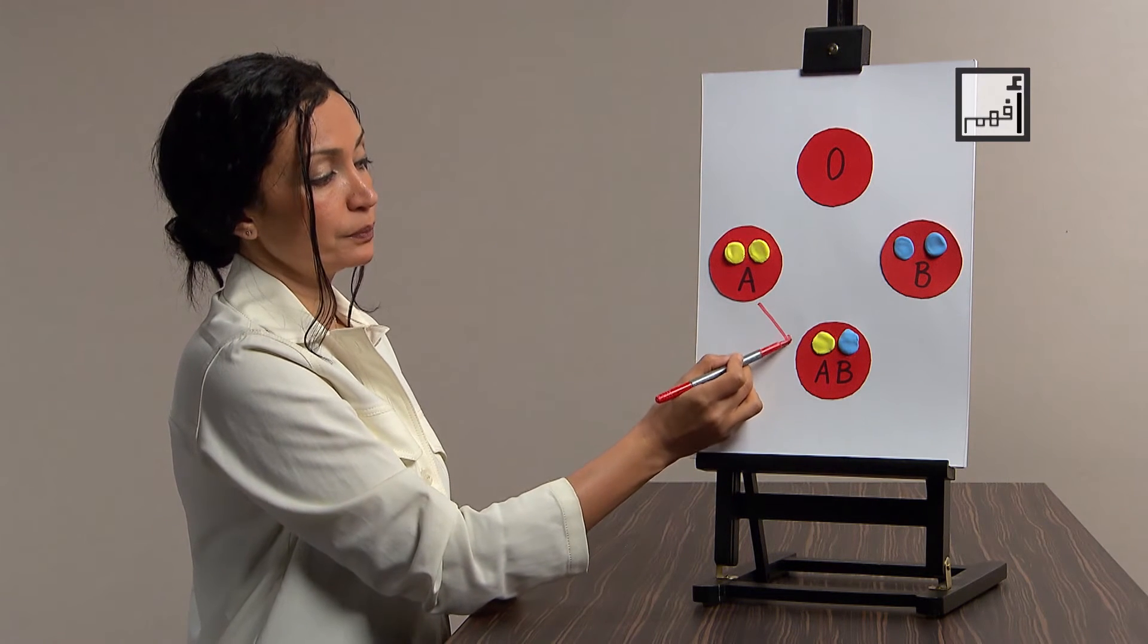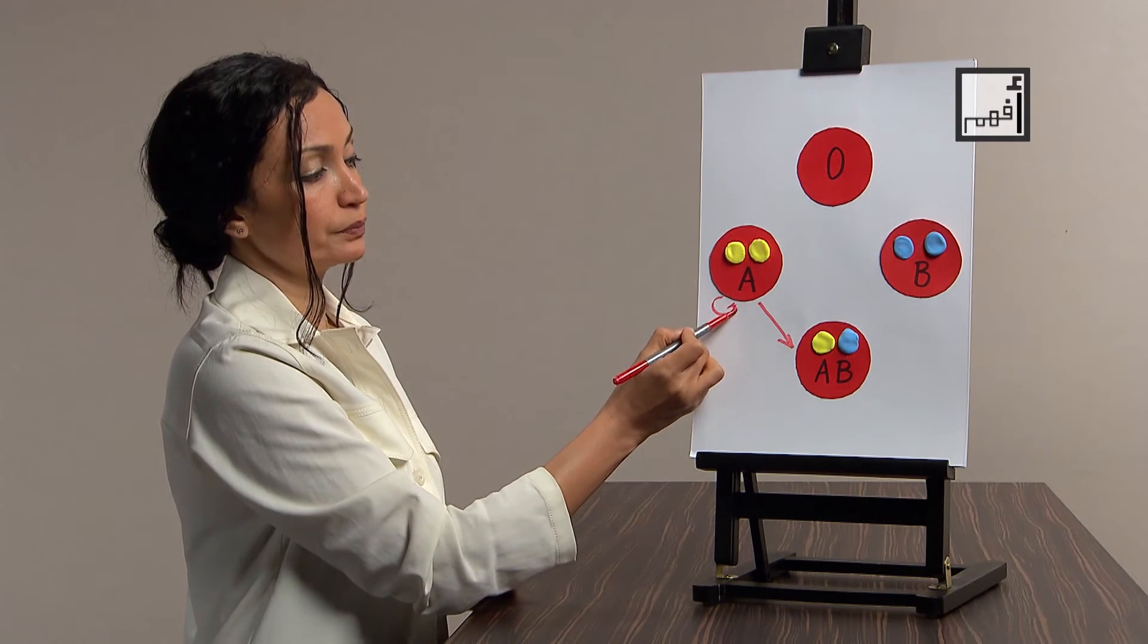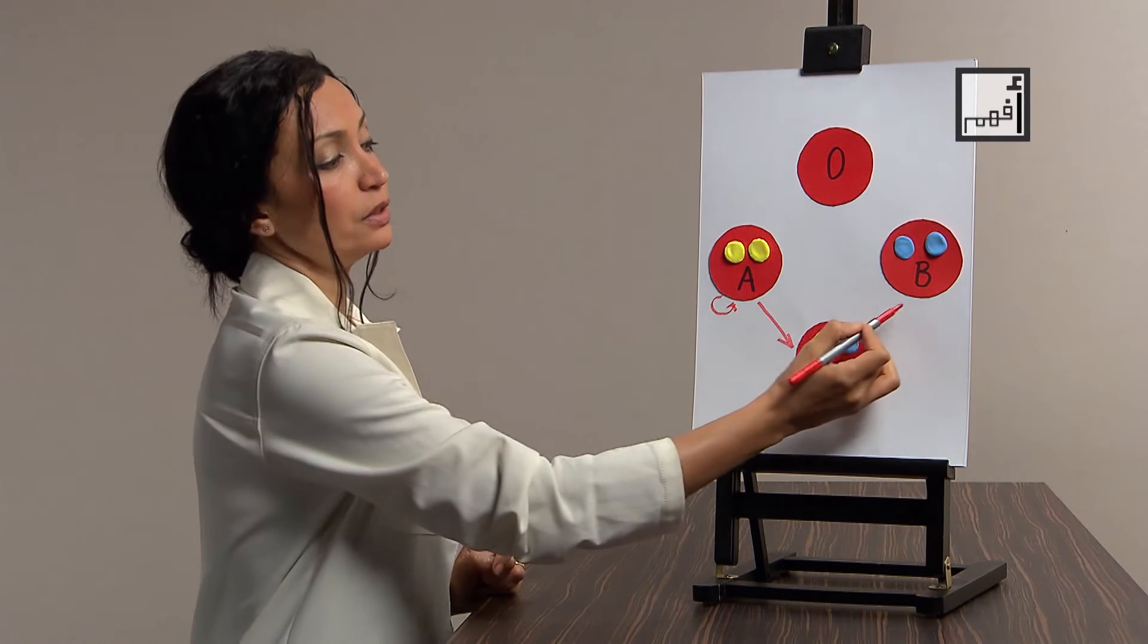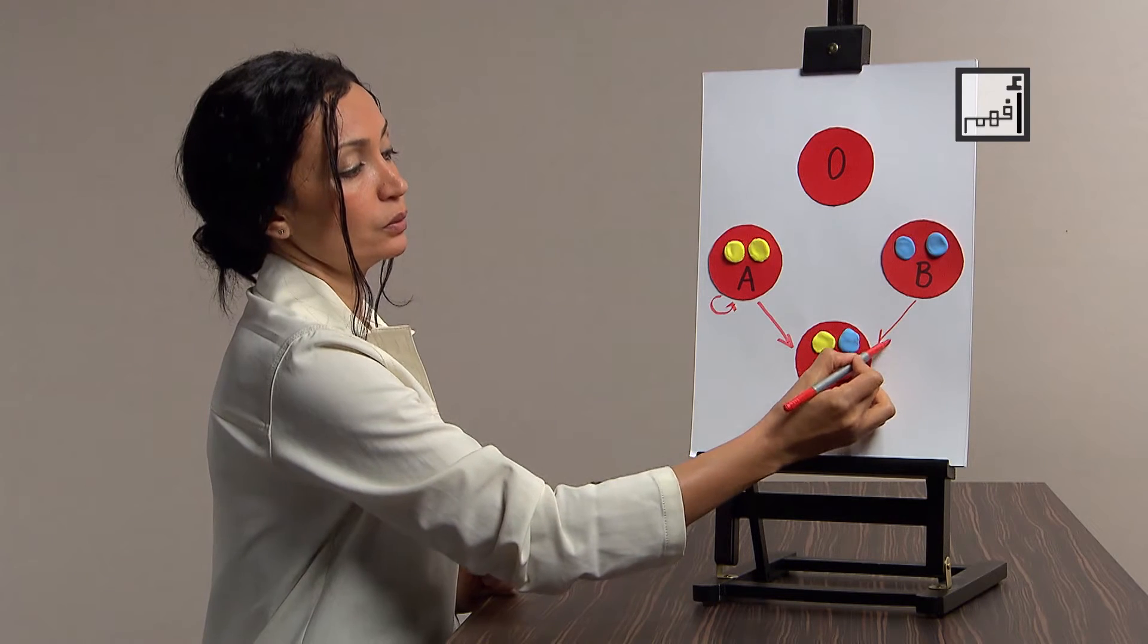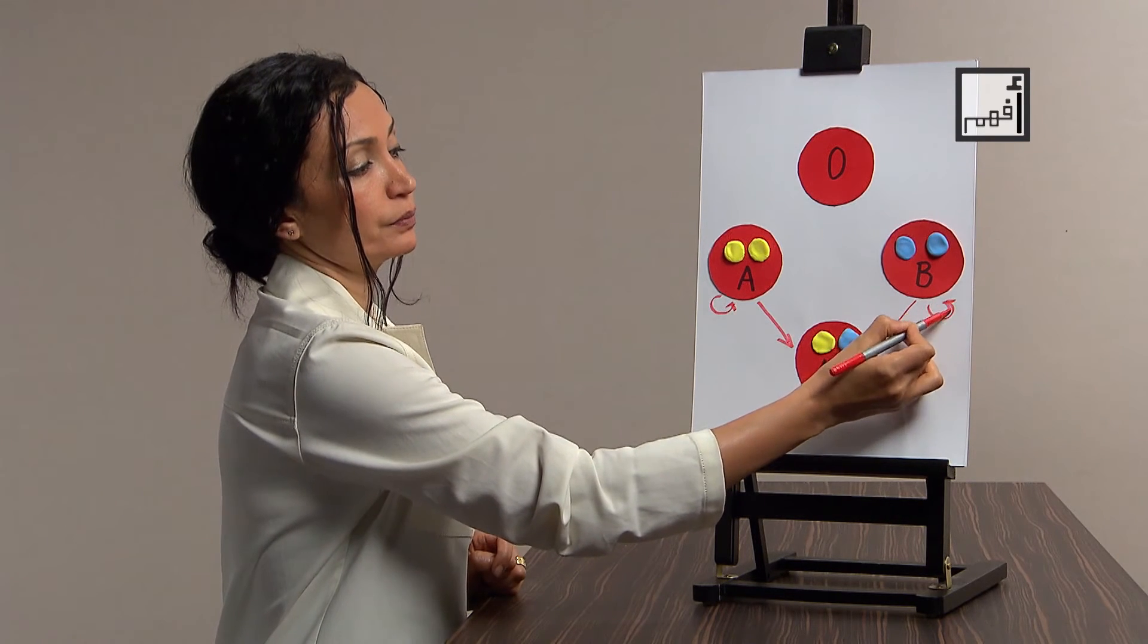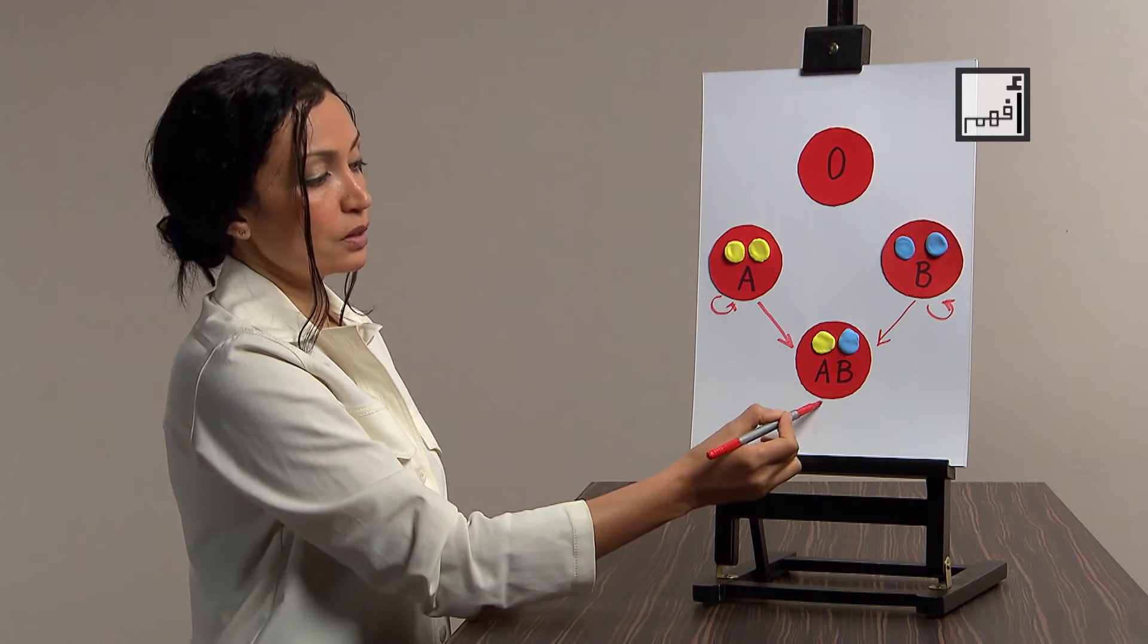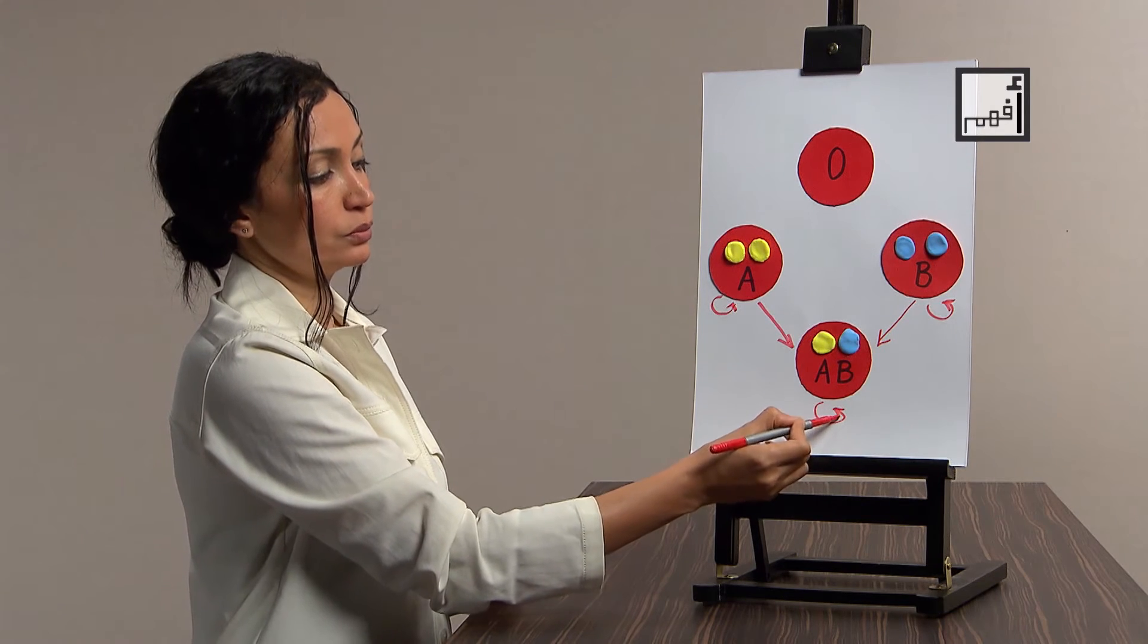So blood group A can donate blood to AB and to itself, of course. Group B can donate blood to AB and to itself, of course. Group AB can donate blood to AB only.